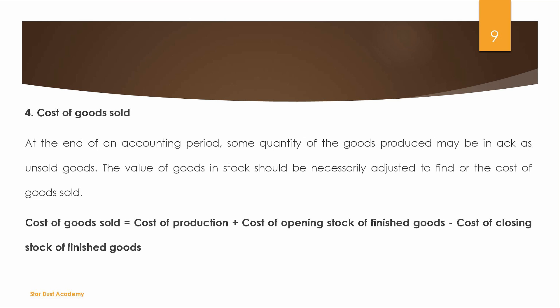Next is the Cost of Goods Sold. At the end of an accounting period, some quantity of goods produced may be in stock as unsold goods. The value of goods in stock must be adjusted to find the cost of goods sold. Cost of Goods Sold equals Cost of Production plus Opening Stock of Finished Goods minus Closing Stock of Finished Goods.